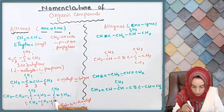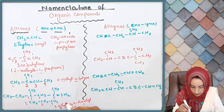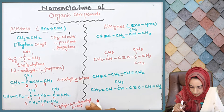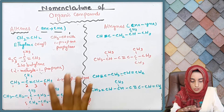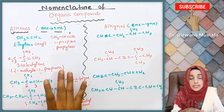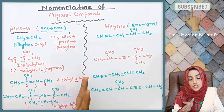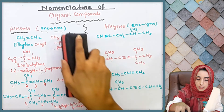...then 3,4-dimethyl. The double bond is at position one — so the full name is: 4-ethyl-3,4-dimethyl-1-heptene.